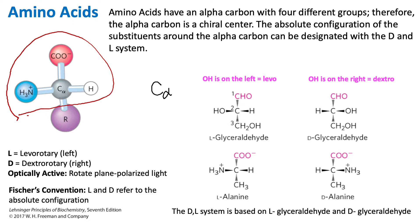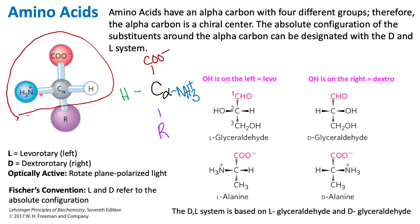So what would that mirror image look like? We would have that central alpha carbon, we would still have that carboxyl group up here, and we would have our R group. But the positions for the amino group and the hydrogen have switched places. We can see that these two, if we superimposed them onto one another — if I took this molecule and placed it on top — the hydrogen would not align with the hydrogen, and the amino group would not align with the other amino group, because they are mirror images of one another.